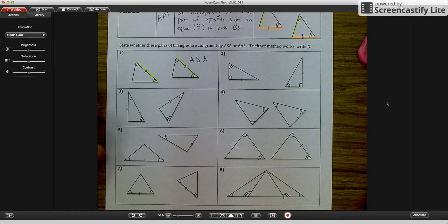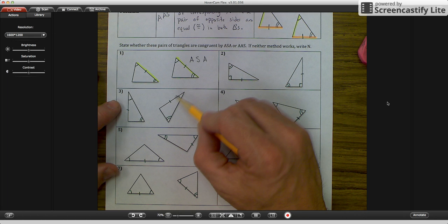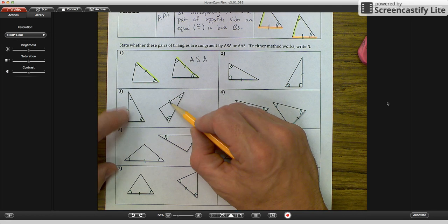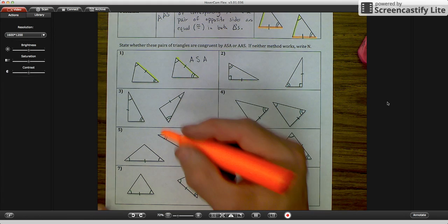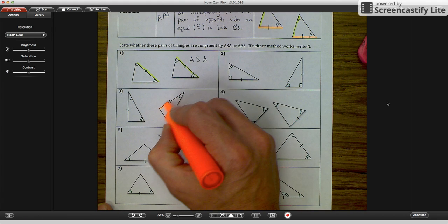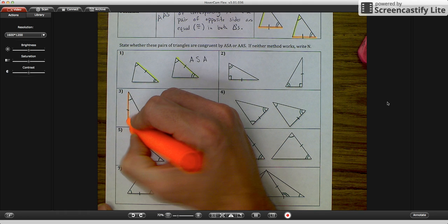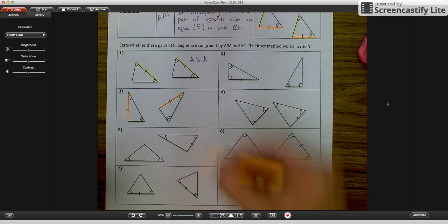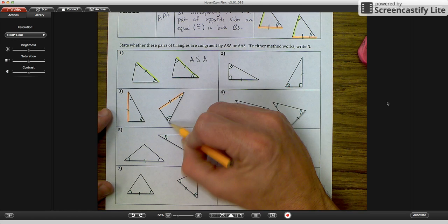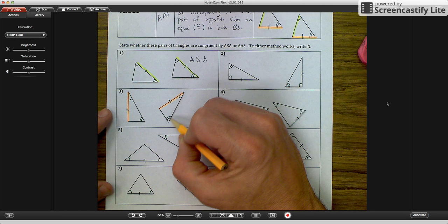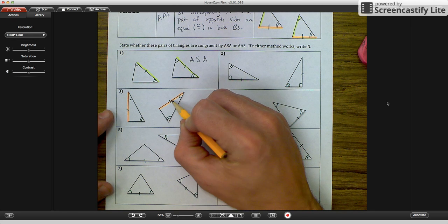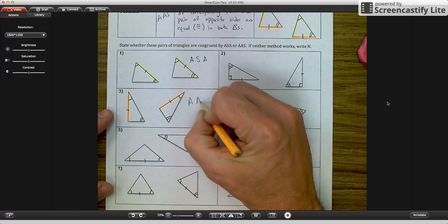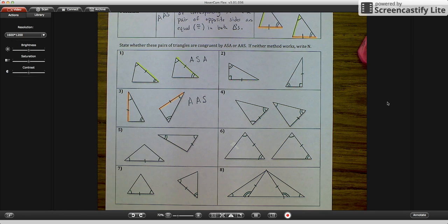As we look at number three, we have a pair of angles corresponding, another pair of corresponding angles, and this side. Let me highlight the side, and let me see where it is. Is the side included? Yes or no? No. Hmm. Let's see. Angle, angle. So it is definitely not included. Angle, angle, side. So this one would be angle, angle, side.